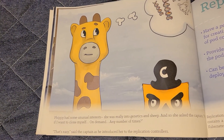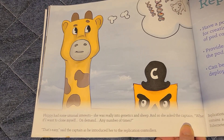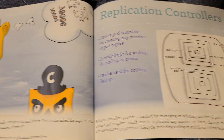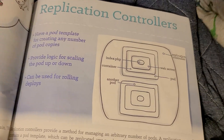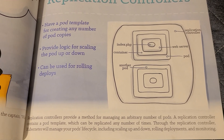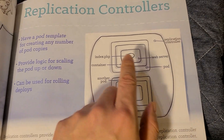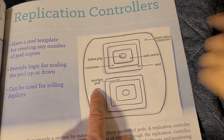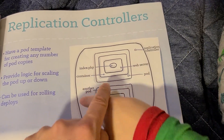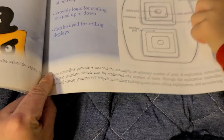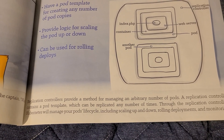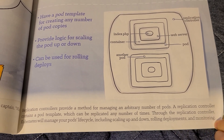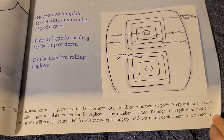Pippi had some unusual interests. She was really into genetics and sheep. And so she asked the captain: What if I want to clone myself? On demand. Any number of times. That's easy, said the captain as he introduced her to the replication controllers. Replication controllers have a pod template for creating any number of pod copies, provide logic for scaling the pod up or down, and can be used for rolling deploys. The replication controller created another pod. Replication controllers provide a method for managing an arbitrary number of pods. A replication controller contains a pod template which can be replicated any number of times. Through the replication controller, Kubernetes will manage your pod's lifecycle, including scaling up and down, rolling deployments, and monitoring.